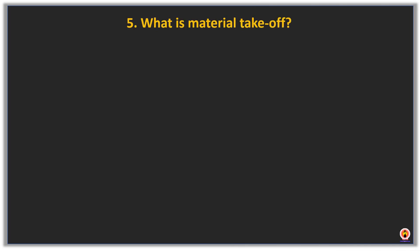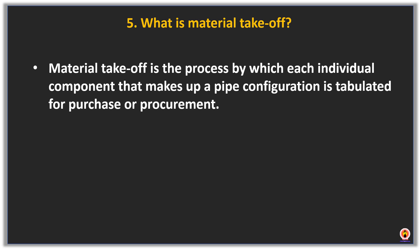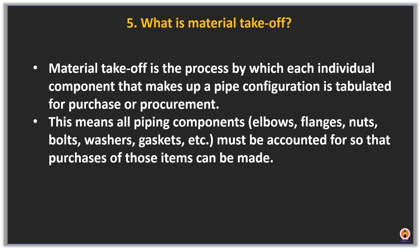Material takeoff is the process by which each individual component that makes up a pipe configuration is tabulated for purchase or procurement. This means all piping components — elbows, flanges, nuts, bolts, washers, gaskets, etc. — must be accounted for so that purchase of those items can be made.